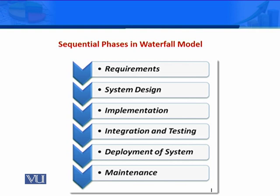The sequential phases in the waterfall model are: Requirements, System Design, Implementation, Integration and Testing, Deployment of the System, and Maintenance. Note that different books may label these phases differently.